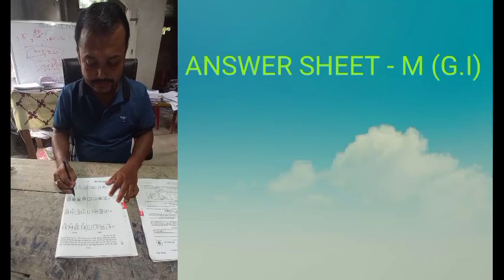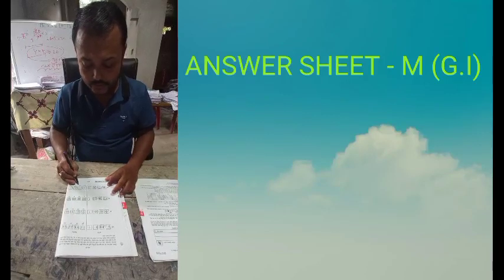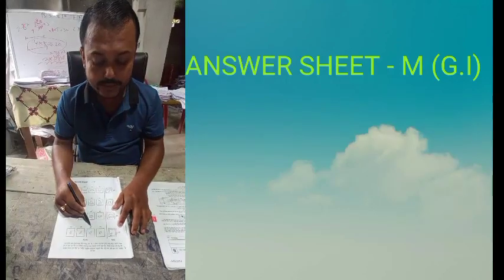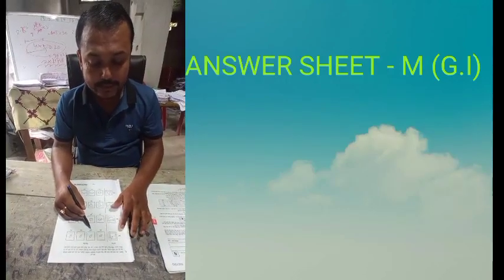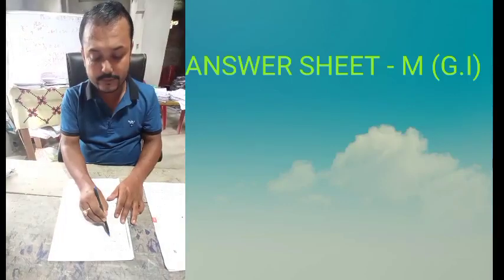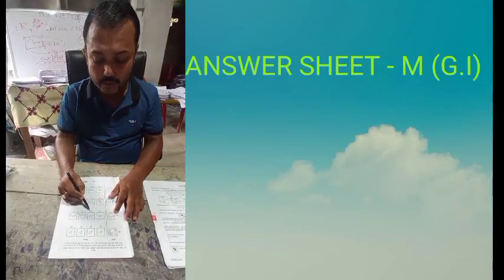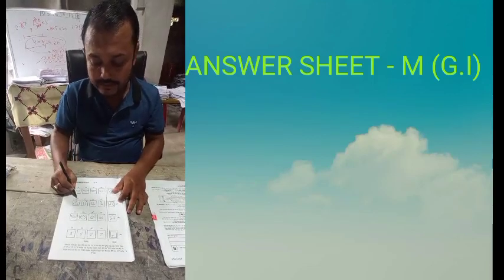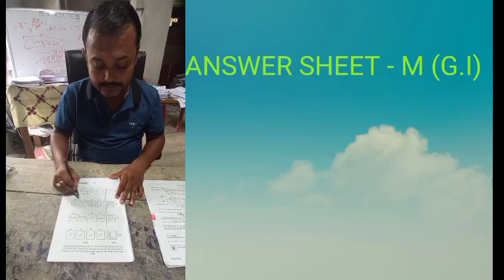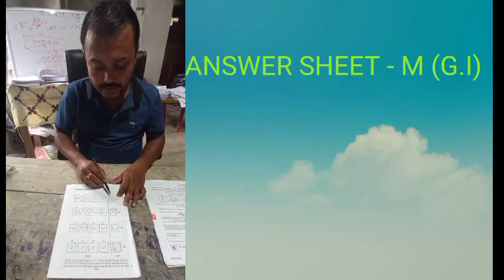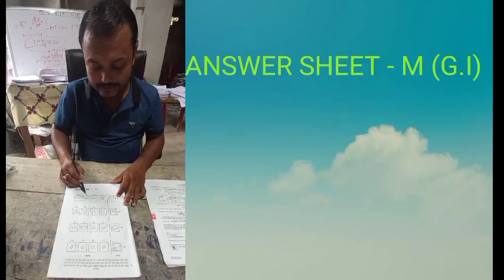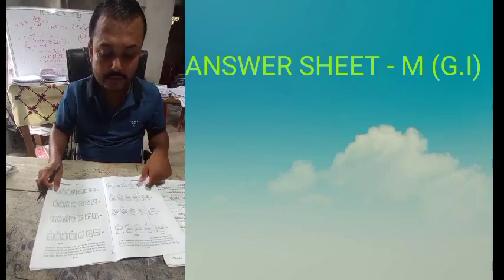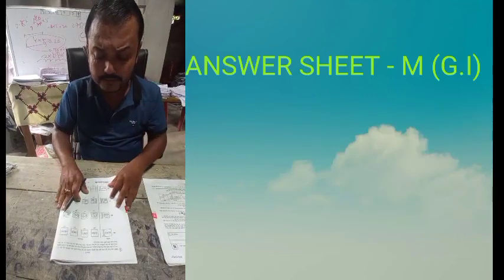Question 19, the answer is C. Question 20, the answer is B. Question 21, the answer is B. Question 22, the answer is B. Question 23, the answer is D, 100% D. Question 24, the answer is C.